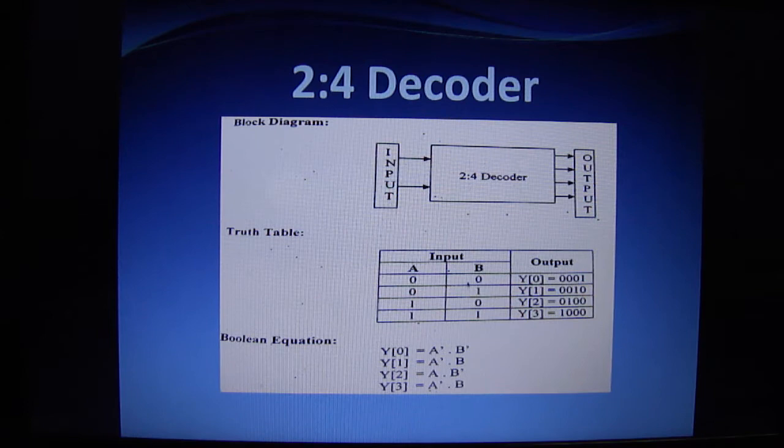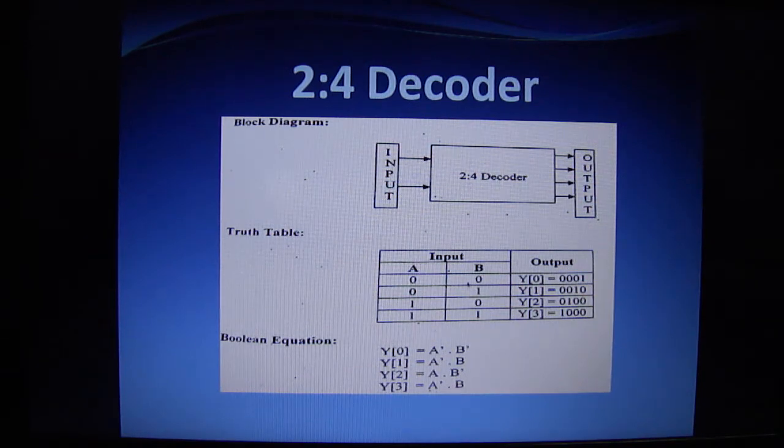For the third output, it is A B bar. And for the last and fourth output, the equation is A and B.